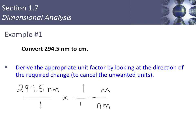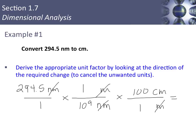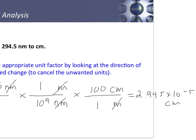One meter is 10 to the ninth nanometers. So the nanometers cancel and I'm left with meters, but I want centimeters. I set up another factor, putting meters in the denominator, and centimeters in the numerator — 100 centimeters in one meter. Now meters cancel and I'm left with centimeters. Using both equivalence statements, I can do my math and get 2.945 times 10 to the negative fifth centimeters.